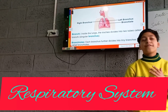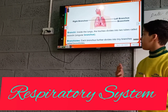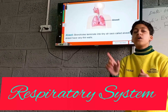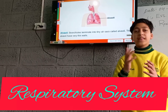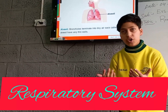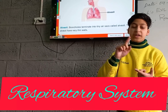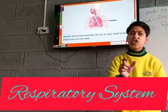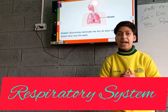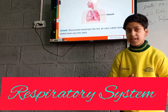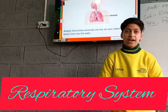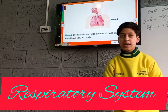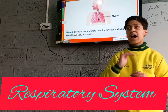After the bronchioles we have the alveoli. Alveoli are tiny air sacs surrounded by blood capillaries. Inside the blood capillaries there is deoxygenated blood. The deoxygenated blood has a high amount of iron, and since oxygen reacts with iron, oxygen gets absorbed into the blood here.